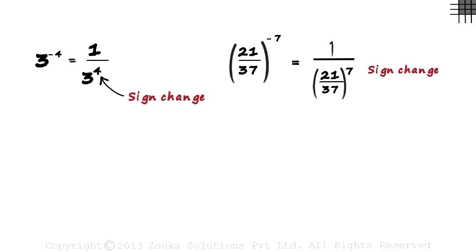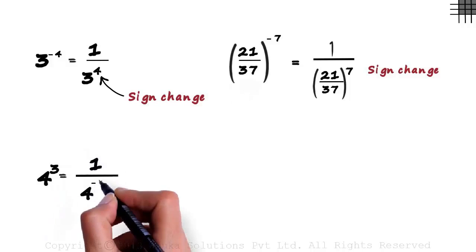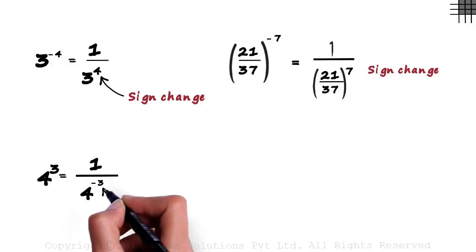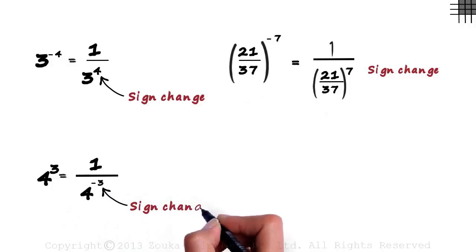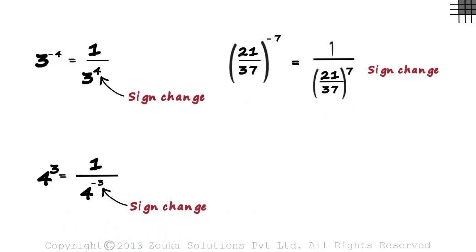The same trick can be used for positive exponents too. Consider 4 raised to 3. We can write it down as 1 divided by 4 raised to minus 3. We changed the sign of the exponent and wrote it under 1. The same trick can be used for positive exponents.